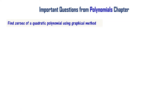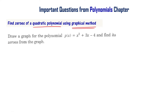Finding zeros of a quadratic polynomial using the graphical method — one of the important topics. Draw a graph for the polynomial P(x) = x² + 3x - 4 and find its zeros from the graph.